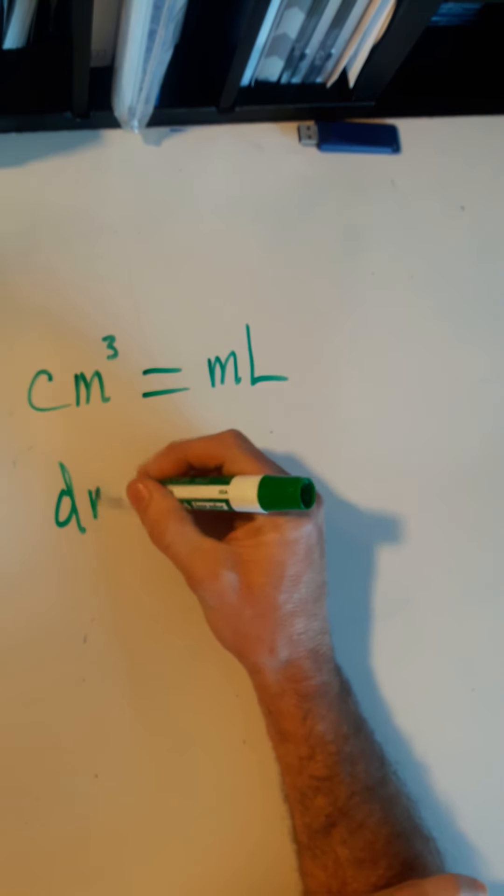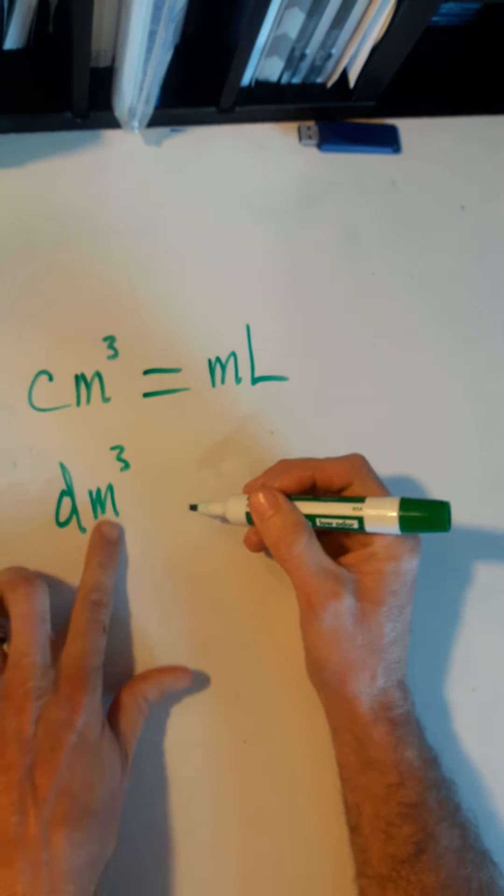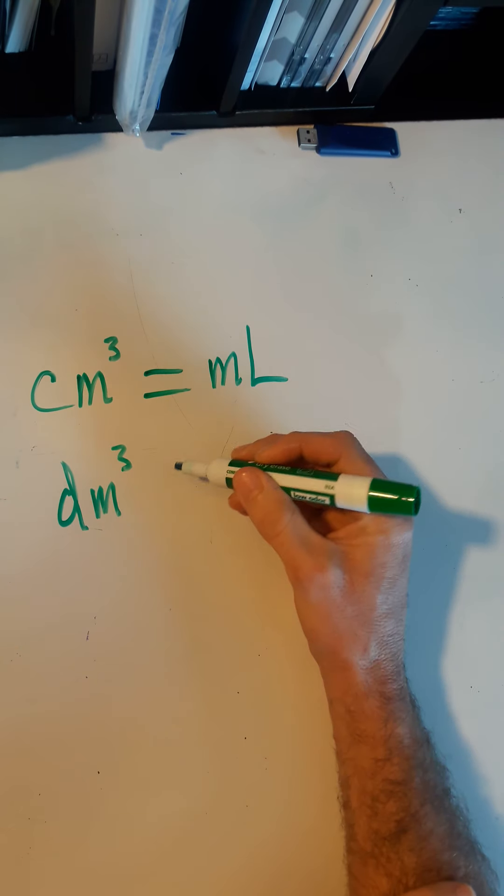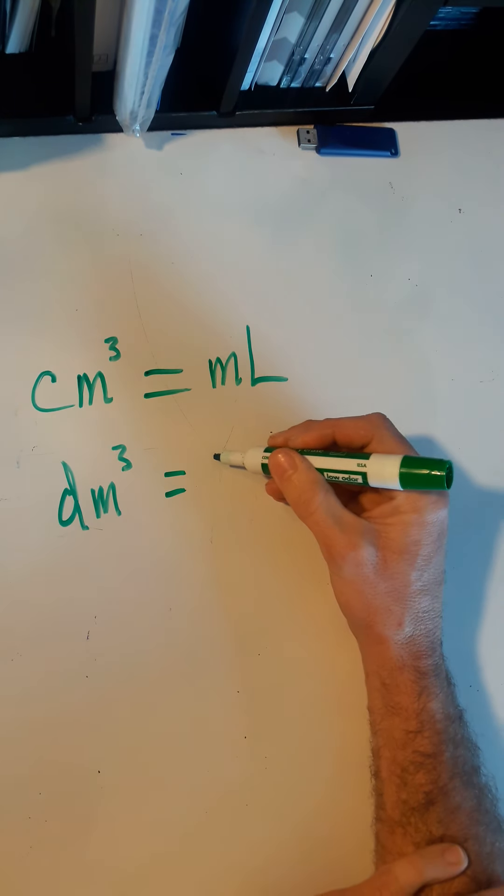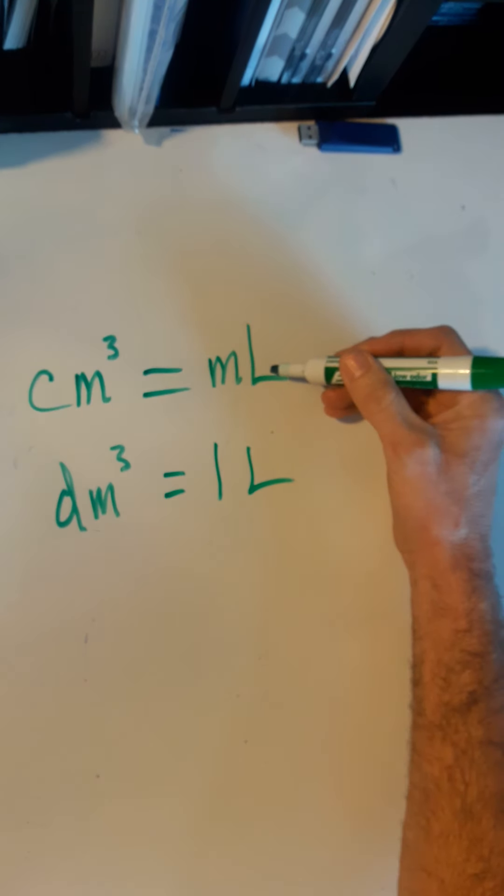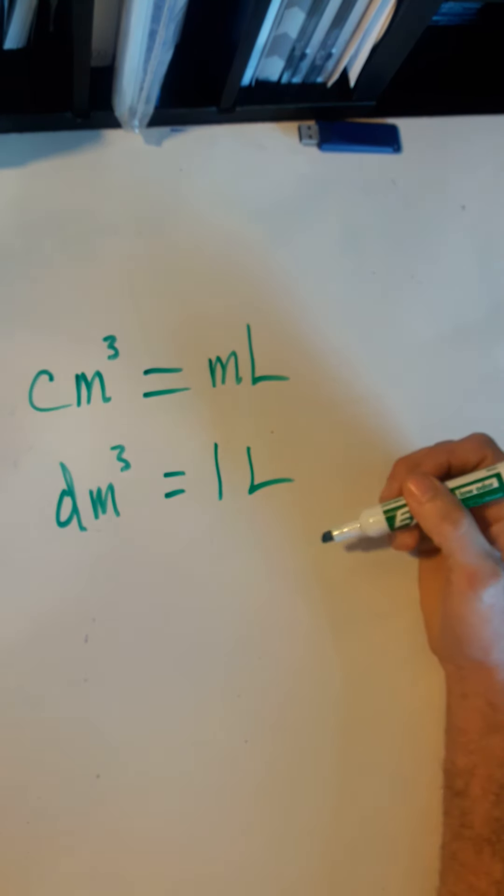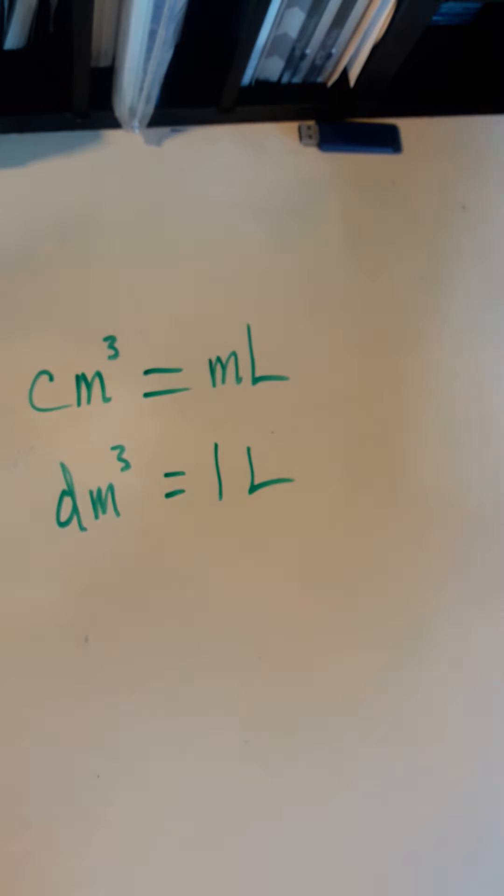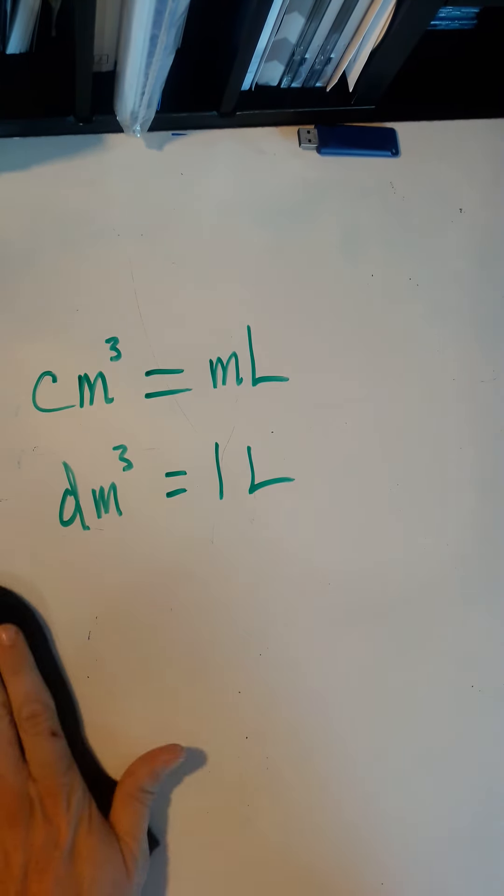A decimeter cubed, which is a thousand centimeters cubed, is equal to one liter. And of course, there are a thousand milliliters in one liter. So those are equal to each other. Just a little review of volume measurements.